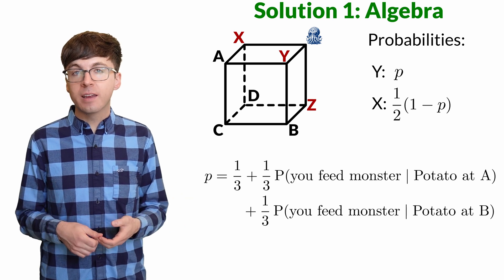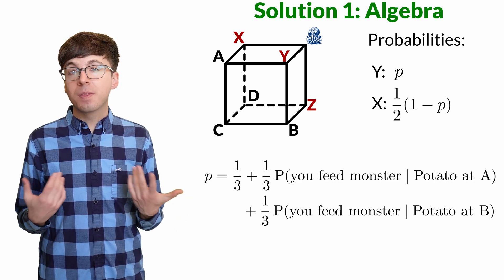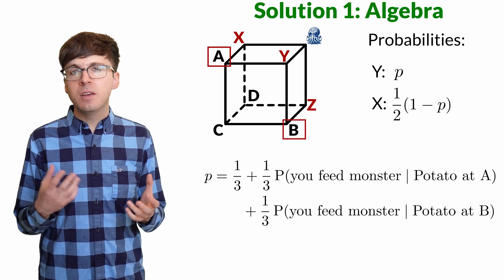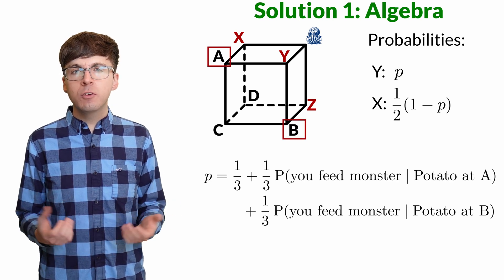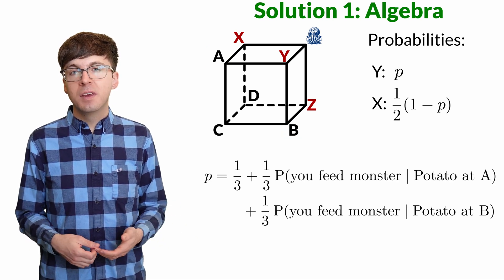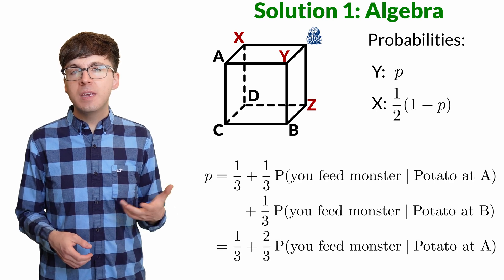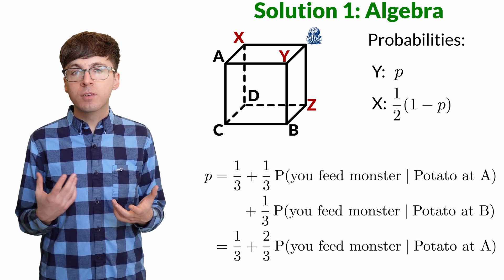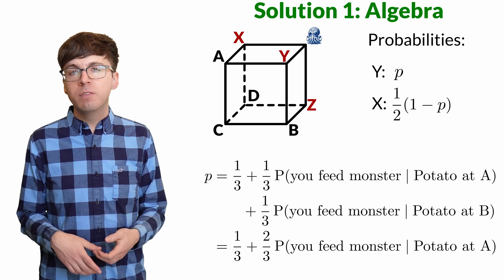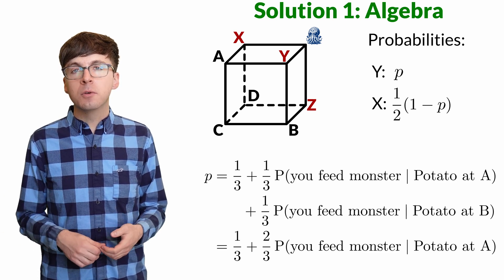Now we apply symmetry again. Relative to our position and the monster's position, a and b are symmetric. So these two conditional probabilities are the same. This simplifies our equation to p equals one-third plus two-thirds times the probability we feed the monster given the potato is at a.